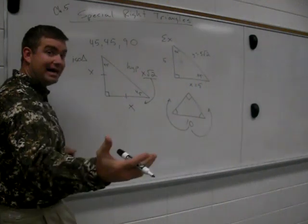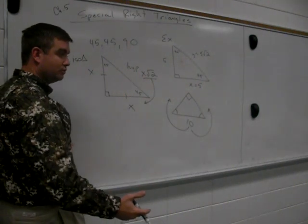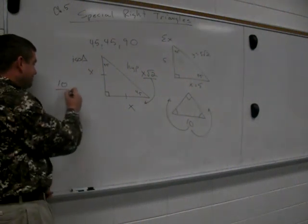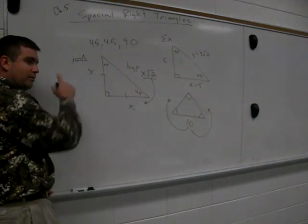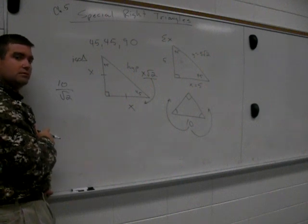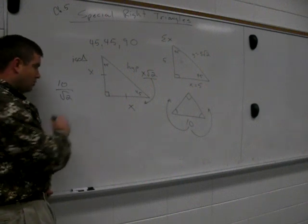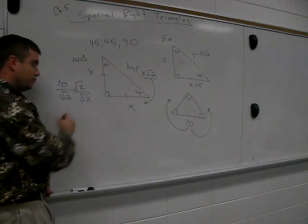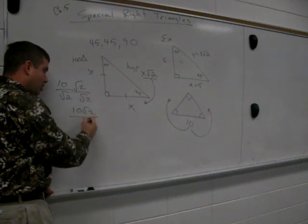What is the relationship between the hypotenuse to the leg? You're going to divide by what? Root 2. You're going to divide by root 2. So if I take 10 and I divide by root 2, then what do I have to do? I can't leave root 2 on the bottom. You're going to multiply by root 2 on the top and the bottom. Correct.